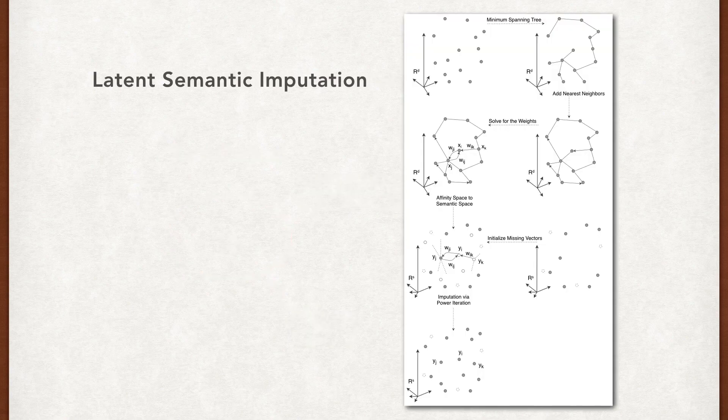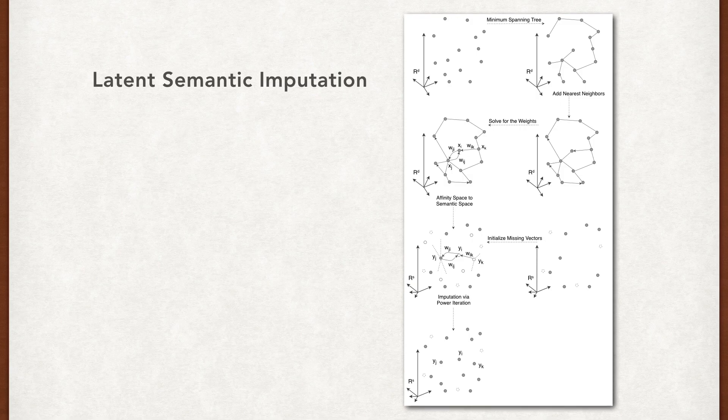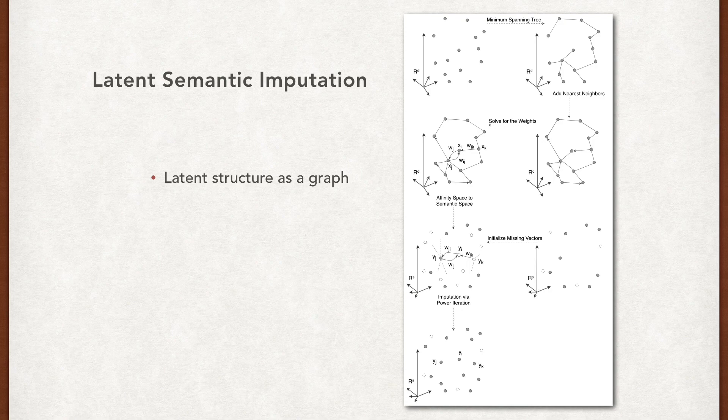Latent semantic imputation is proposed to solve this problem. It is a method to combine entity representations from different spaces, where the latent structure of the entities is formed as a graph, and the imputation process mimics representation diffusion.